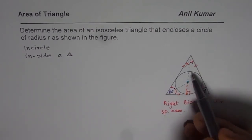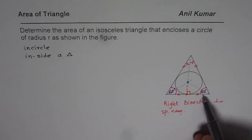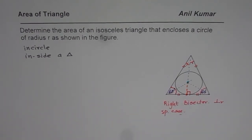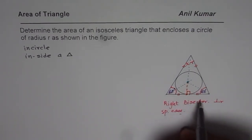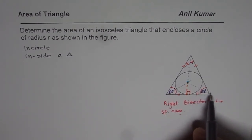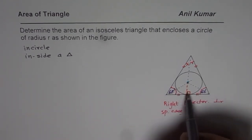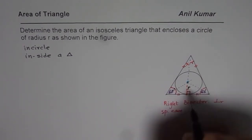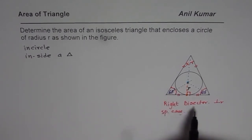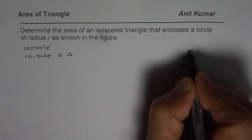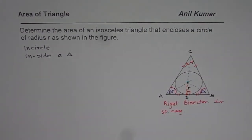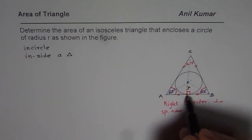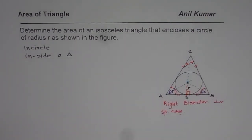The same line that bisects the apex angle also bisects the opposite side and is perpendicular to it. This is only the case in an isosceles or equilateral triangle. We have an isosceles triangle where the base angles are each 65 degrees — taken at random. Now let me label this triangle as A, B, and C. The right bisector, which is also the angle bisector and the altitude, is CD, where O is the center of the incircle.